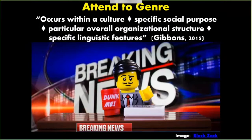If we think about a newscast, the social purpose is to convey information. We know the general organizational structure is that we're going to have the main highlights and most important news at the beginning of the program. At some point we're going to talk about the weather, sports, and local community events, and there will be ads mixed in through the newscast. They're going to use certain kinds of language — we might hear more of the passive voice, we might hear more of the who, what, when, why, how kind of reporting. Knowing how that genre works can position students to be able to access it when they're reading or listening to it.